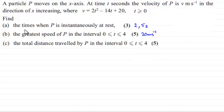And in Part A we had to find the times when P was instantly at rest, and that was at 2 and 5 seconds, and then in Part B we had to work out the greatest speed of P in the interval between 0 and 4 seconds inclusive, and we found that it was 20 meters per second.